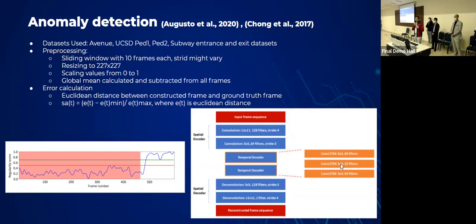The work presented by Augusto and his colleagues depended on a work that was presented earlier by Chong and his colleagues in 2017, which is the anomaly detection network for video.